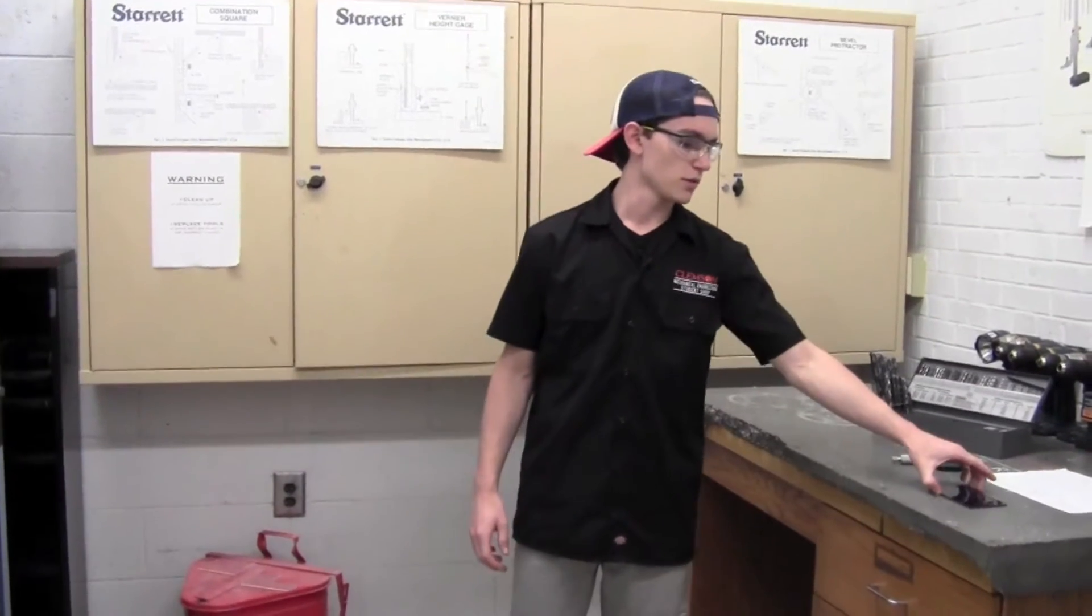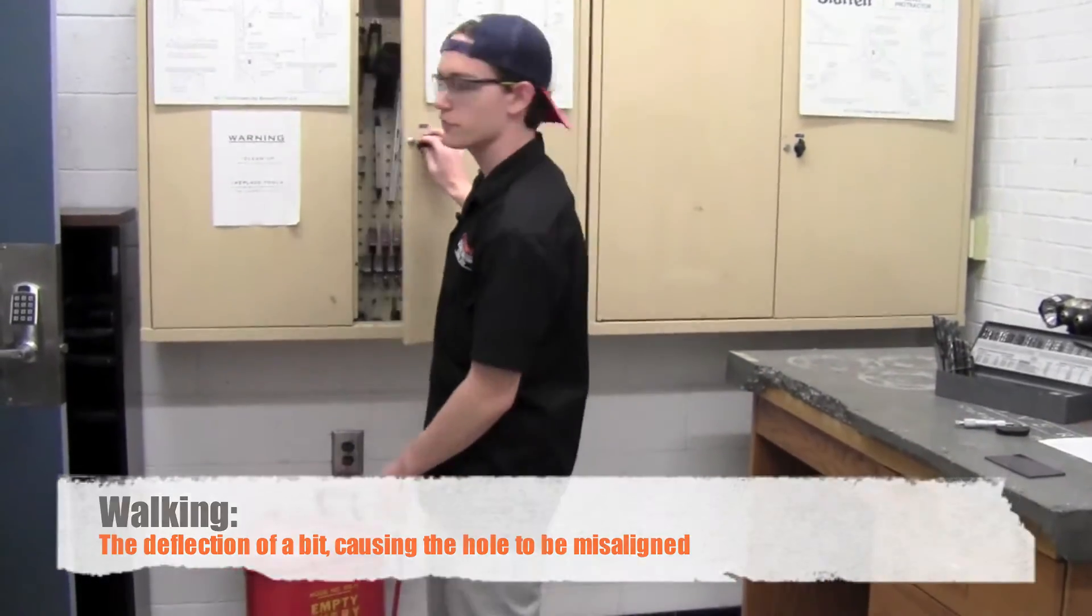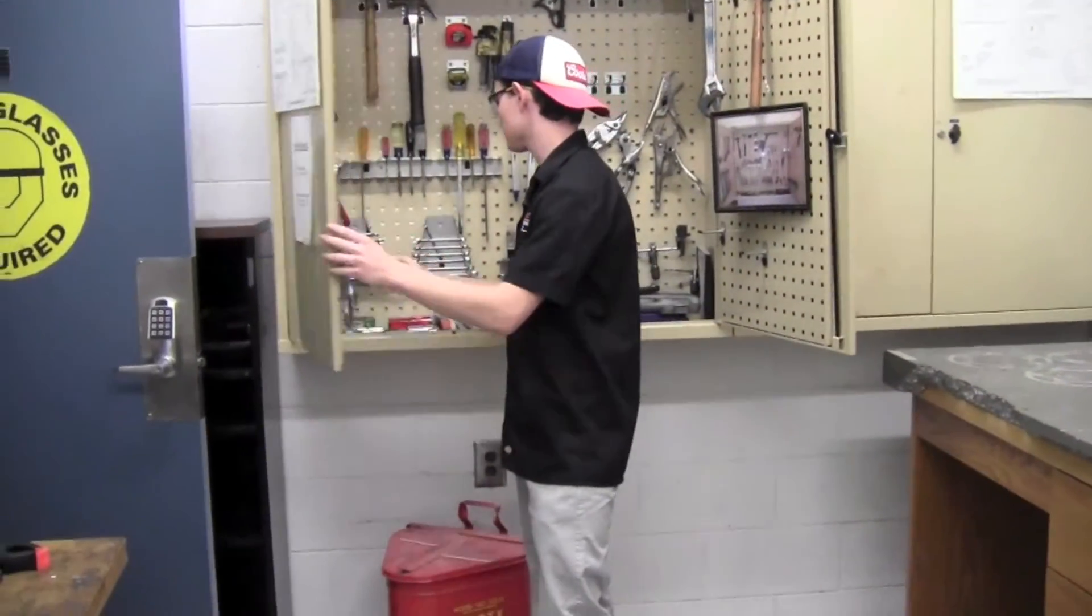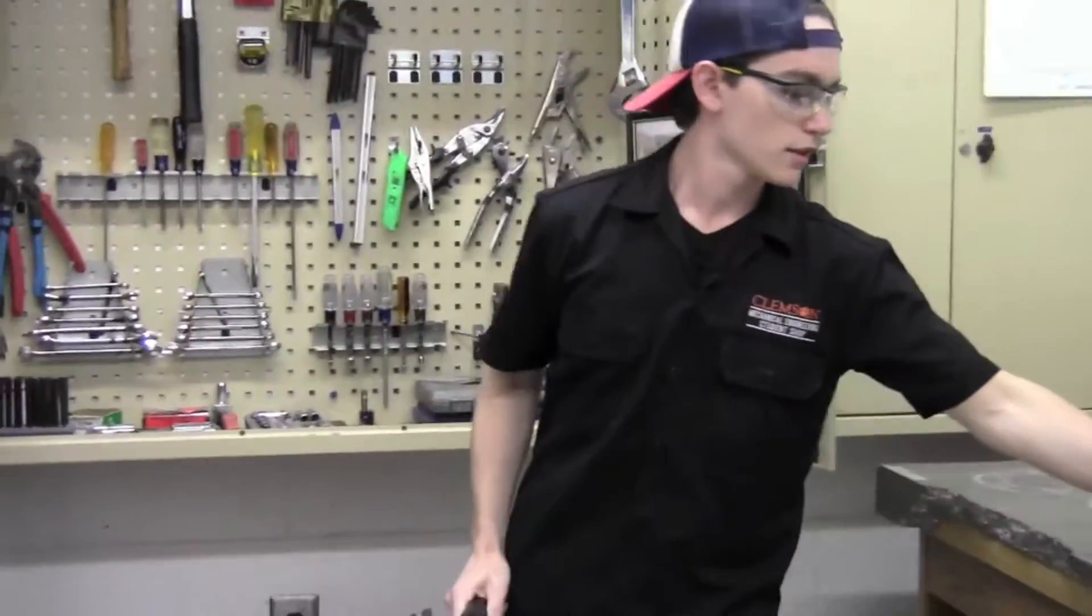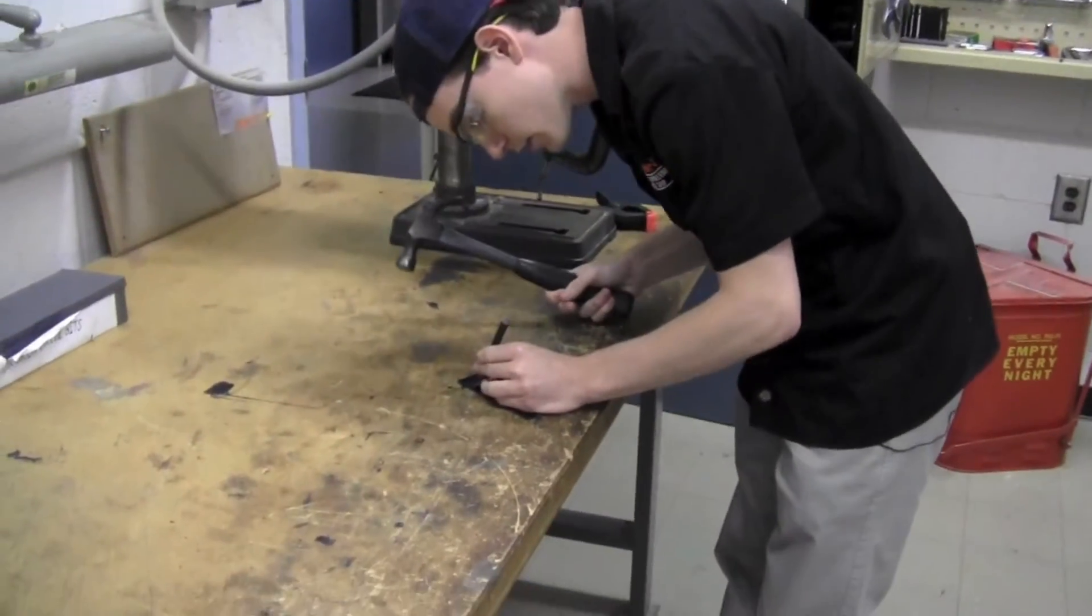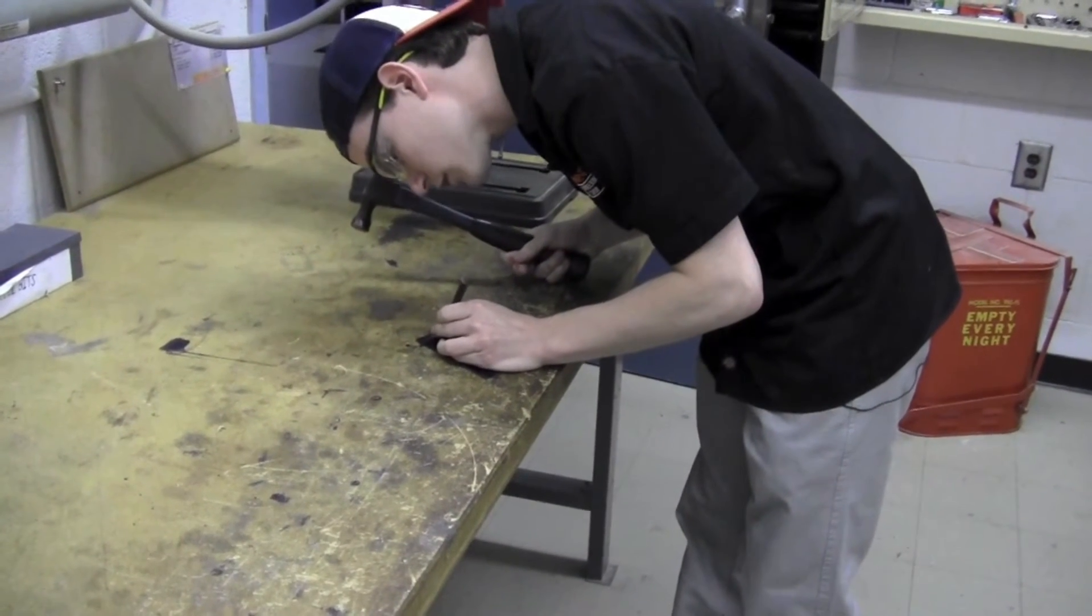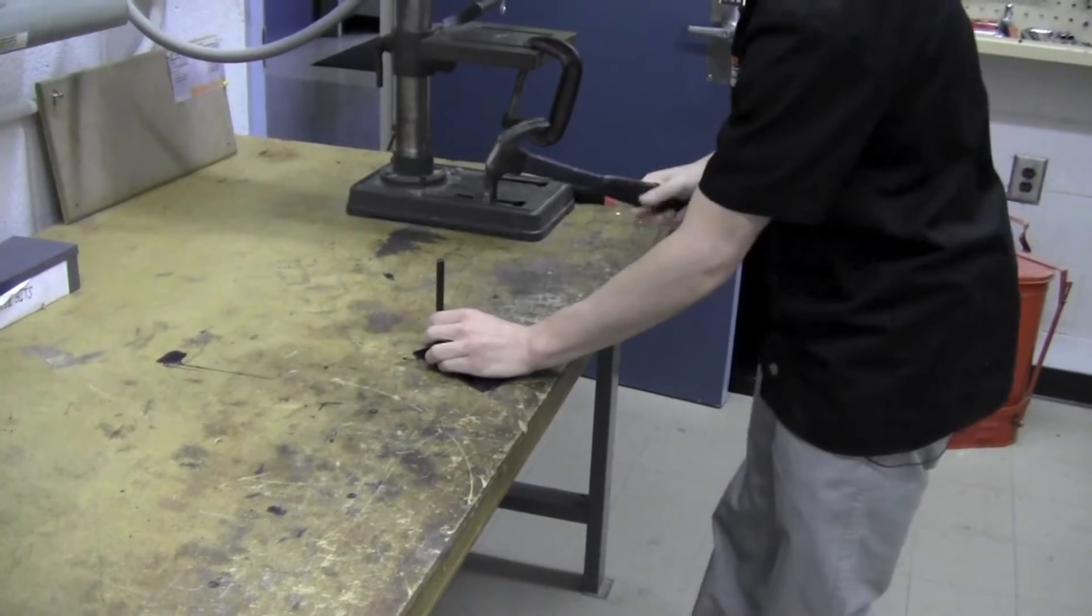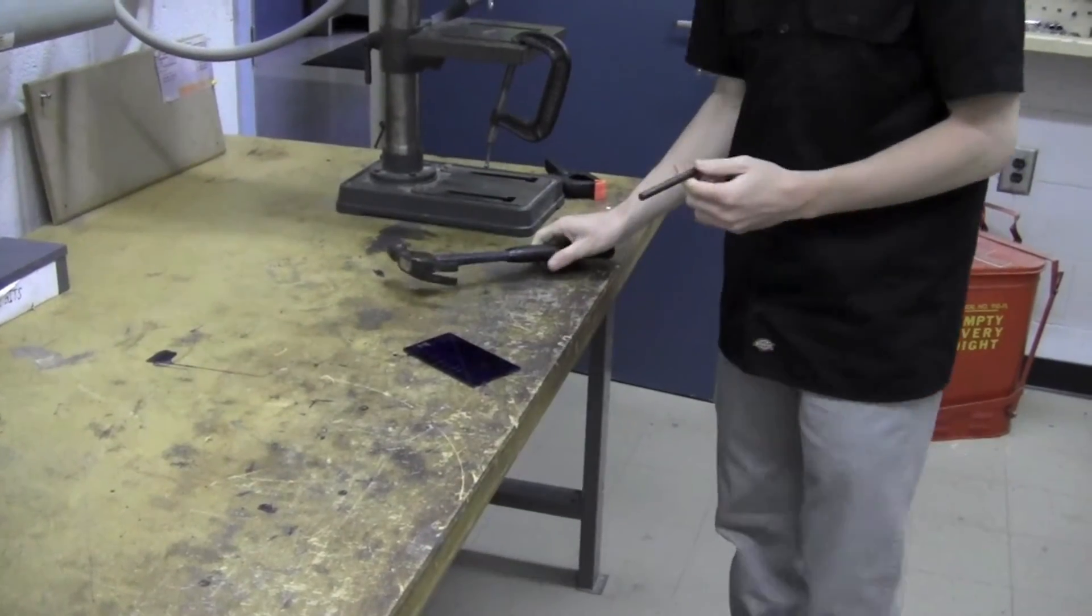Before you begin drilling into your part, you'll either want to use a punch or a center drill to prevent any type of walking. Right now we're going to use a punch, which can be found in this cabinet. So you'll grab one of these and a hammer and come over here and line it up to the best of your ability on the intersection of your two lines that you etched in when you were laying out. And you'll give it a quick tap to indicate where your hole will start.